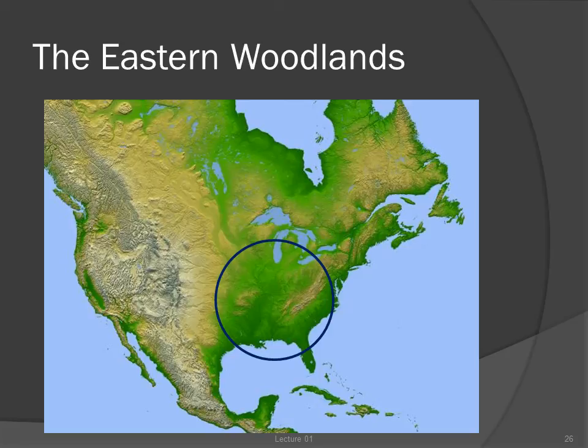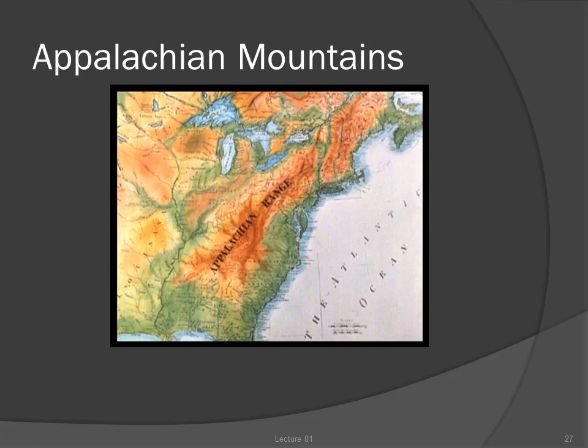Before it was cleared for agriculture, this was a region of large rivers and even larger forests. A continuous forest, mostly deciduous hardwood and transitioning to conifers at higher elevations, covered most of the region. The only major mountain ranges in the region are the Low Appalachians and their subsidiary ranges, like the Blue Ridge and Smoky Mountains.